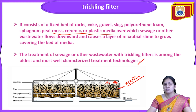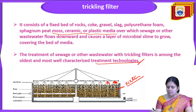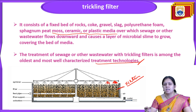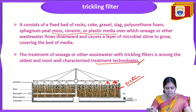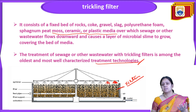The treatment of sewage or other wastewater with a trickling filter is among the oldest and most well-characterized treatment technologies. The trickling filter consists of a fixed bed of rocks, coke, gravel, slag, polyethylene, foams, sphagnum peat moss, ceramic, or plastic media, over which sewage flows downward and causes a layer of microbial slime to grow covering the bed of the media.